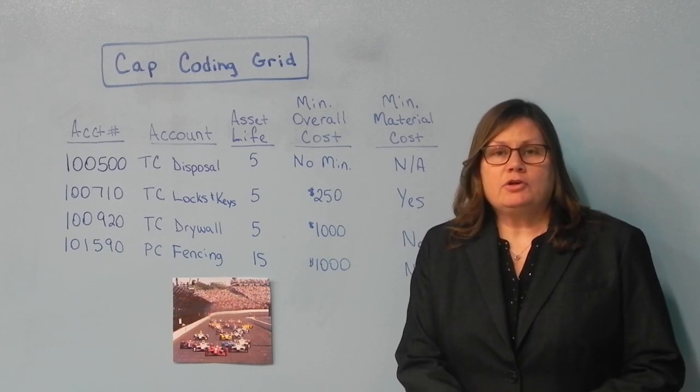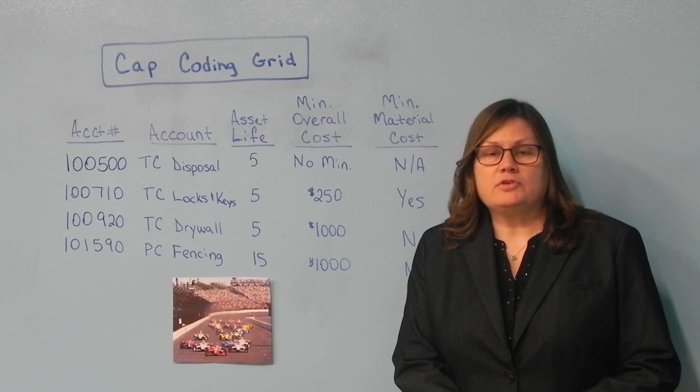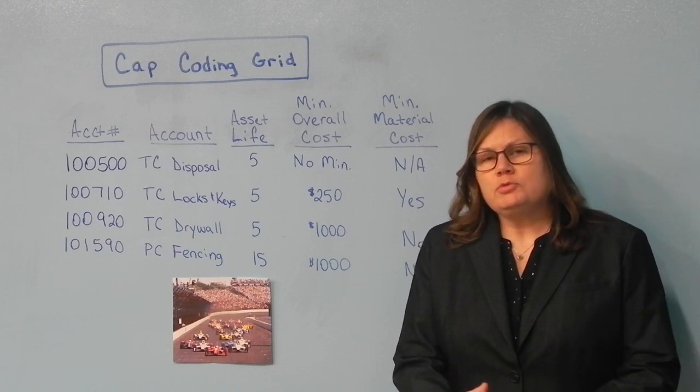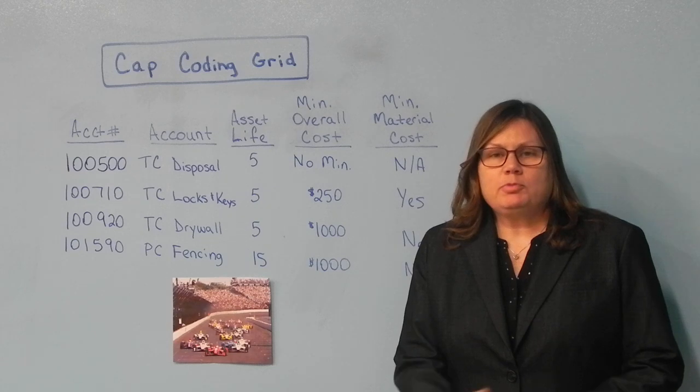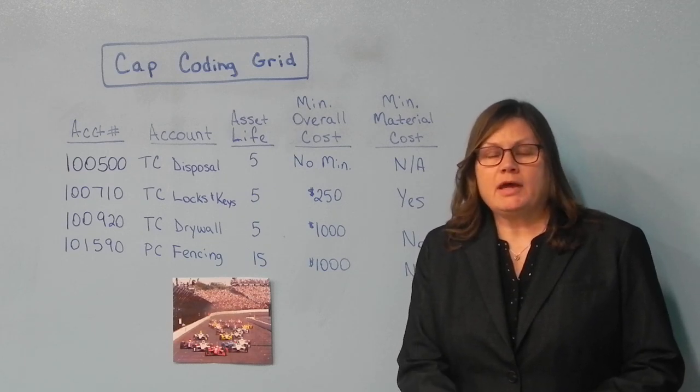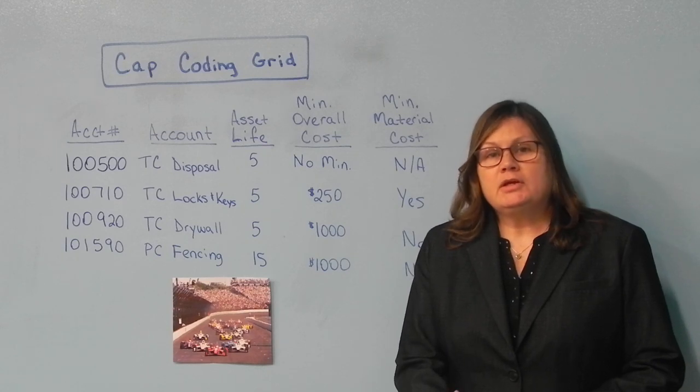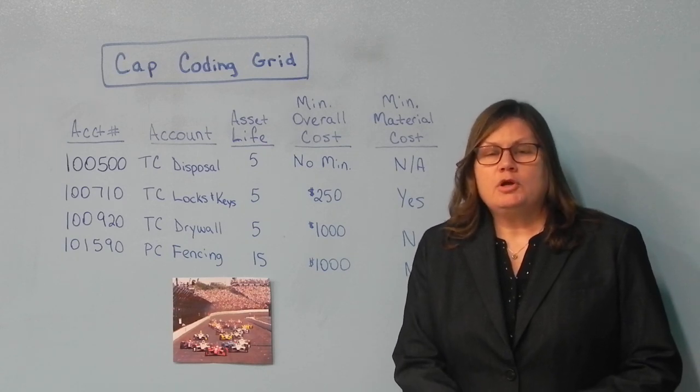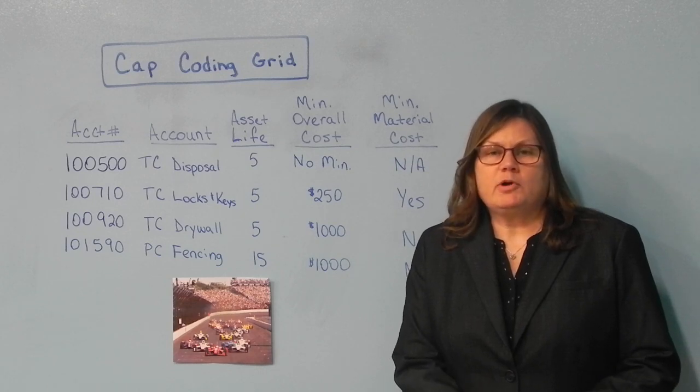However, there are some categories that require $250 in material costs. This could be either individually, so if you purchase a tool like a ladder for $250, that would be a capital item. Or it could be in combined costs, such as electrical, which requires $250 in overall materials for that project.